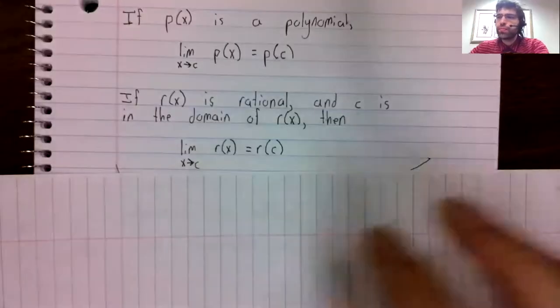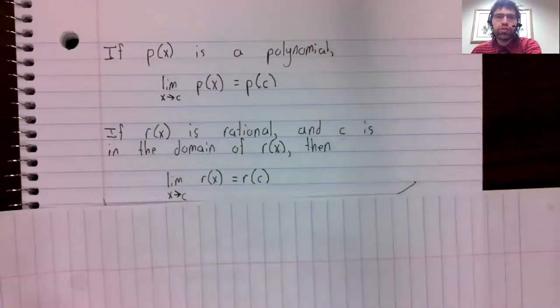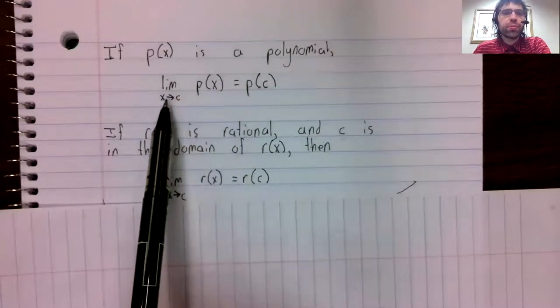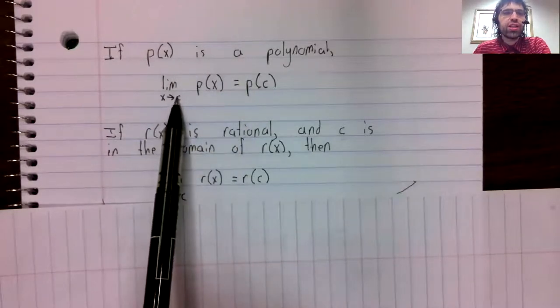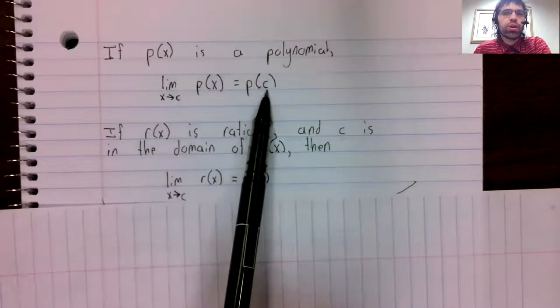We've seen two examples of continuity, although we didn't use that word at the time. We have stated the following results: if you have a polynomial and you want the limit as x approaches C, you can just stick C into the polynomial.